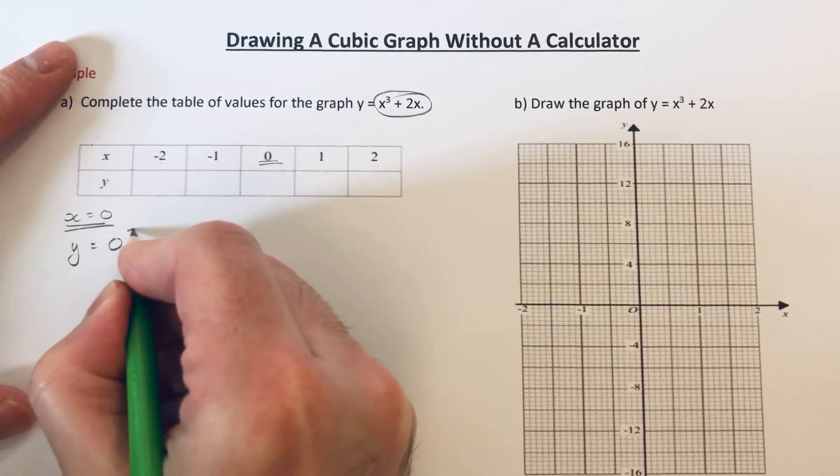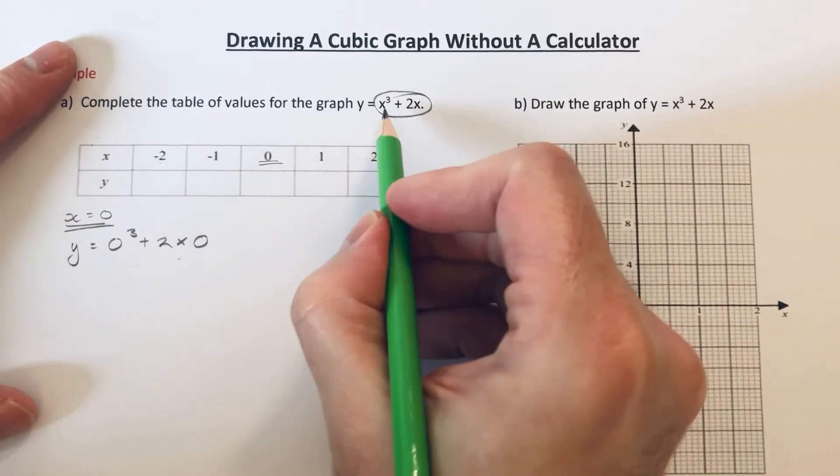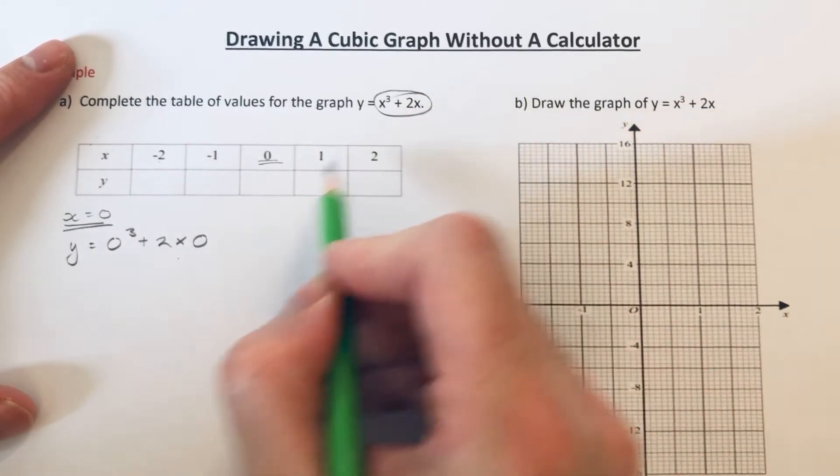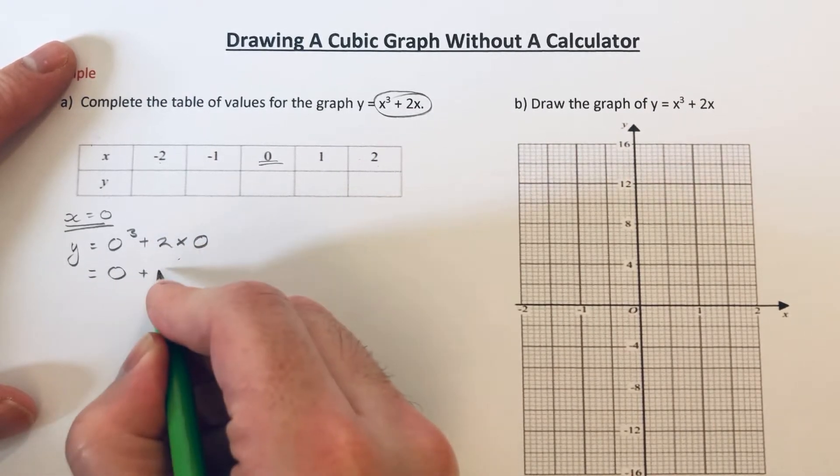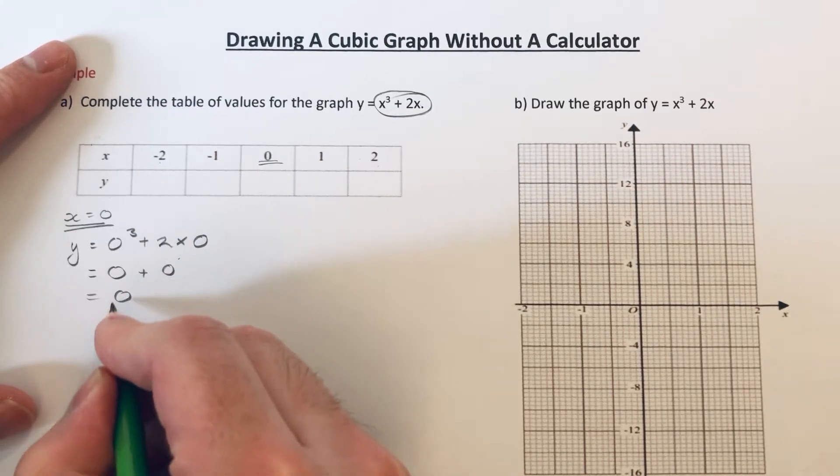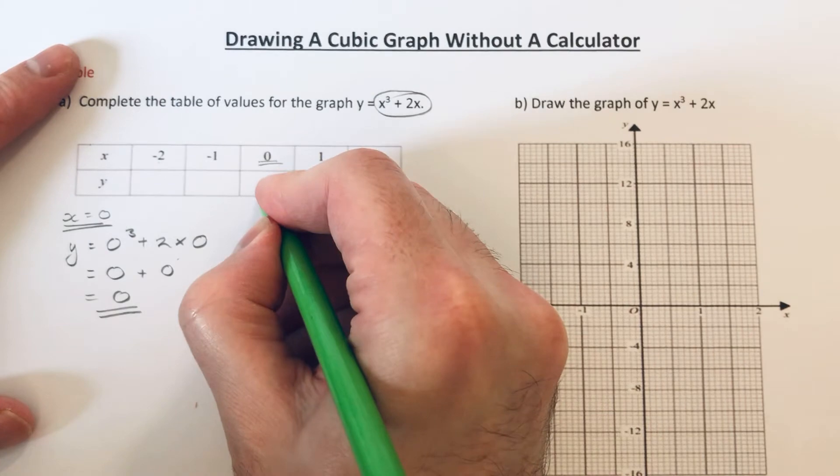So to get y, it would be 0 cubed plus 2 times 0. So I've substituted the 0 here and here. So 0 cubed is nothing and 2 times nothing is also nothing. So at x equals 0, y is also 0.